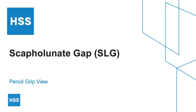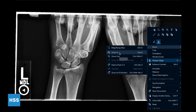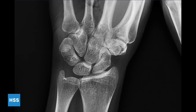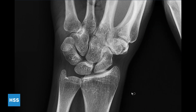The first measurement is scapholunate gap, best visualized in a pencil grip view, which allows you to see the distance between the scaphoid bone and the lunate. You'll want to zoom in so that you can properly visualize the scaphoid and the lunate. Begin by using the annotate tool to draw a circle around the midcarpal joint.